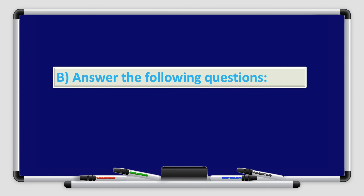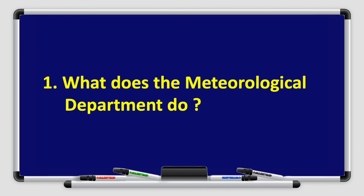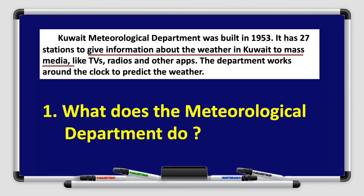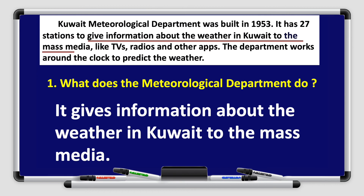All right boys and girls, now answer the following questions. What does the Meteorological Department do? It has 27 stations to give information about the weather in Kuwait to the mass media. Excellent — it gives information about the weather in Kuwait to the mass media.